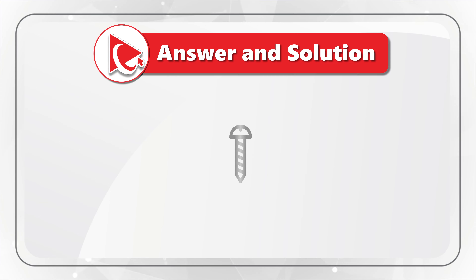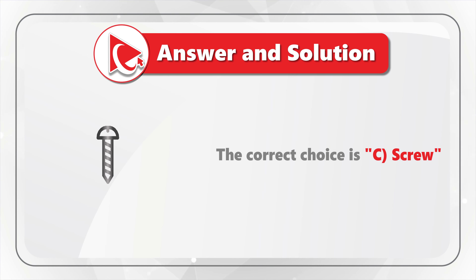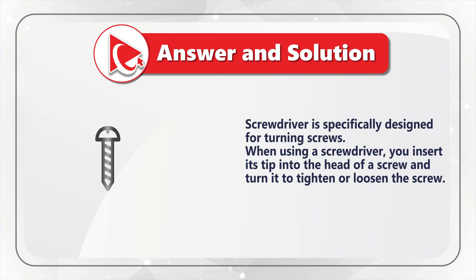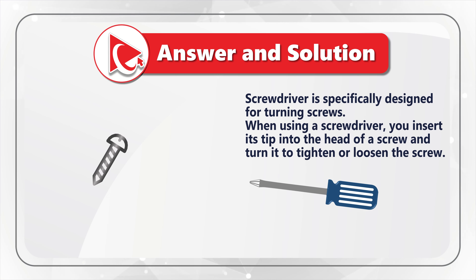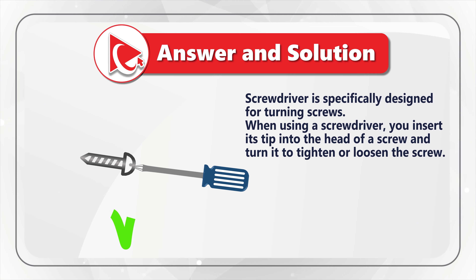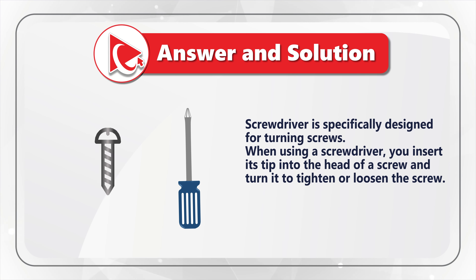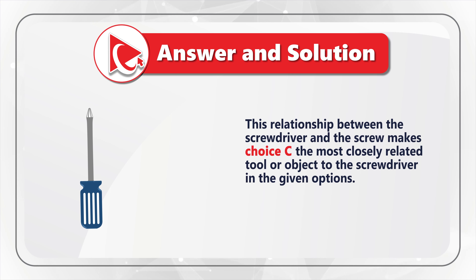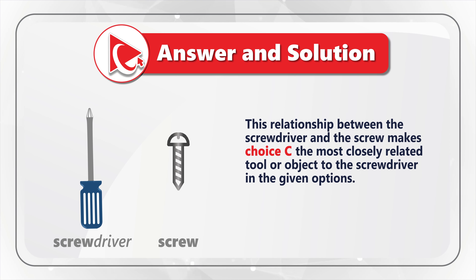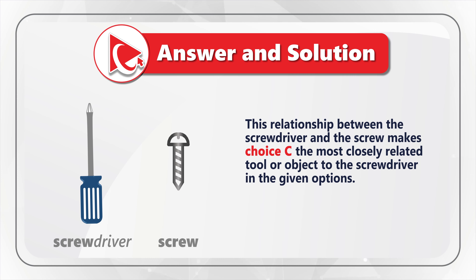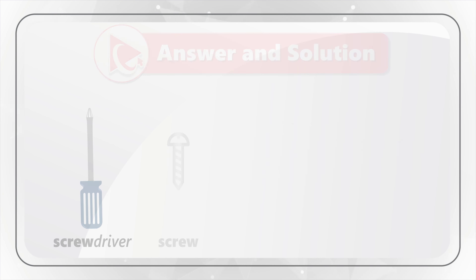Choice D is a hammer, a tool used to drive nails or other fasteners, which is different from the screwdriver's primary function. And Choice E is a bolt, which is a type of fastener like a screw, but not directly related to a screwdriver. So the correct answer here is Choice C: screw. In fact, a screwdriver is specifically designed for turning screws — you insert its tip into the head of a screw and turn it to tighten or loosen it. You can even guess it from the names: screwdriver and screw.